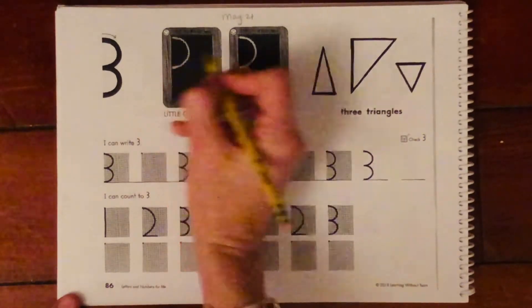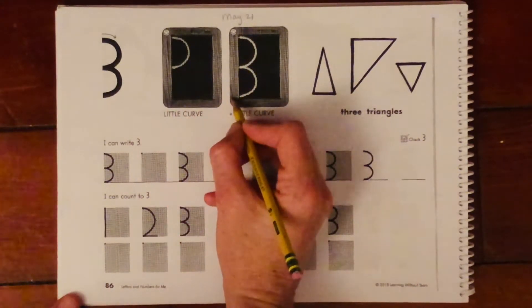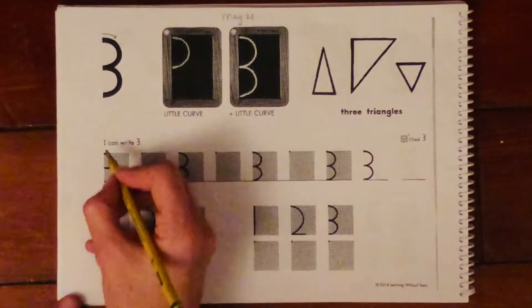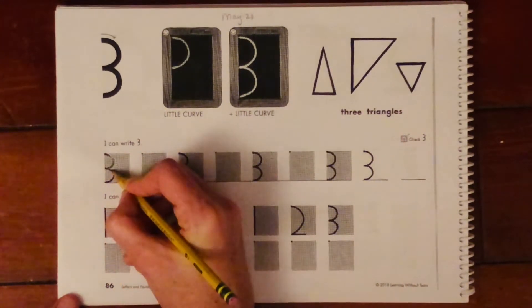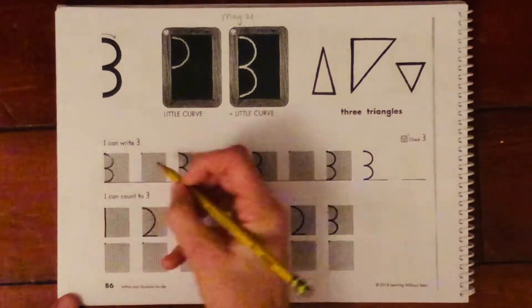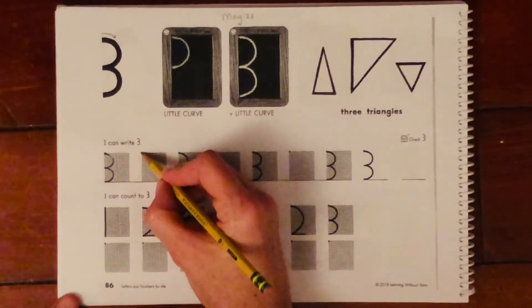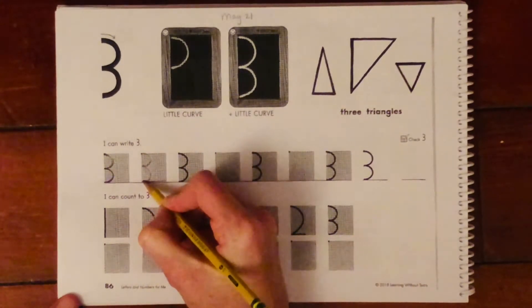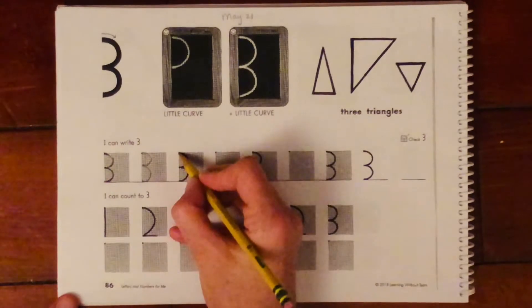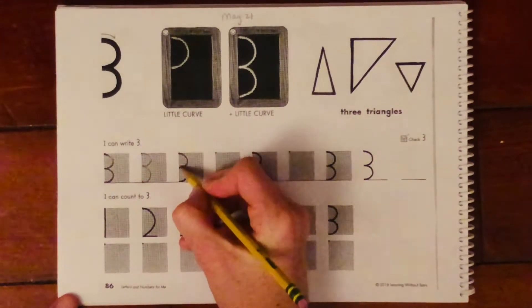It almost looks like we're going to make a P and then we're going to make a B. So that might help you to know the direction for number three. We always start our numbers at the top. We're going to make a little curve and a little curve. So I'm going to try to look at like maybe the middle. Okay. So I'm making a little curve to the middle and another little curve all the way to the bottom because my numbers and letters, they always sit down on that line.